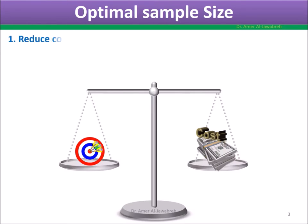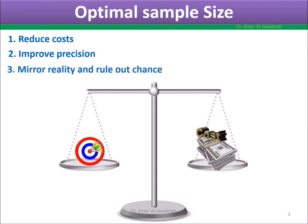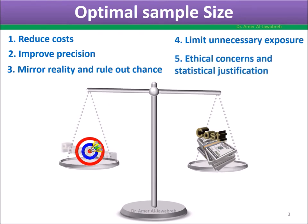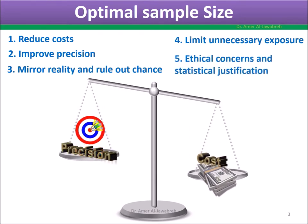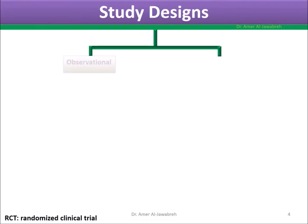Optimal sample size serves five purposes: 1) To reduce cost. 2) To improve precision. 3) To mirror reality and rule out chance. 4) To limit unnecessary exposure. And 5) For ethical concerns and statistical justification.